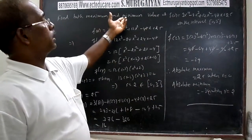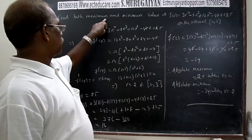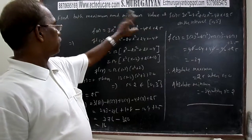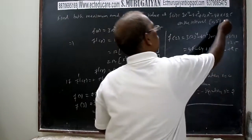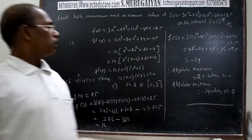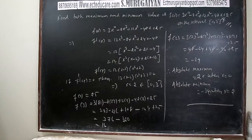The word 'absolute' is used because of the closed interval — it is understood this refers to the singular absolute maximum as well as absolute minimum, and that is a key point to remember. My humble request to all students: please like and share my videos with all your friends in your school and other schools. Thank you for watching.